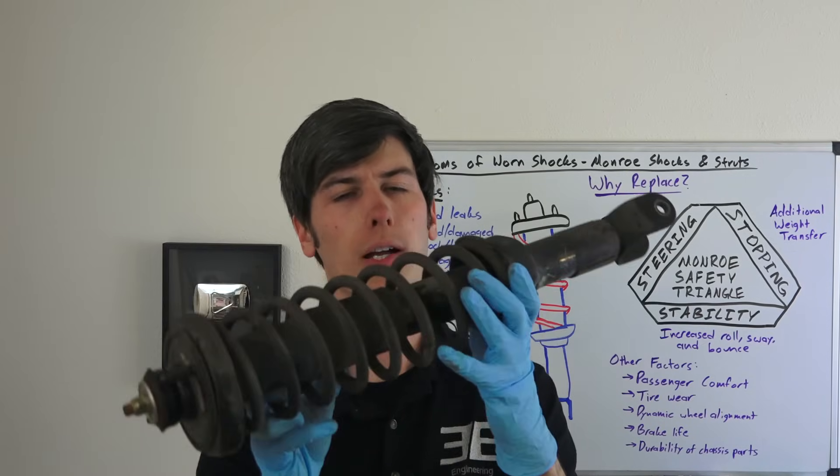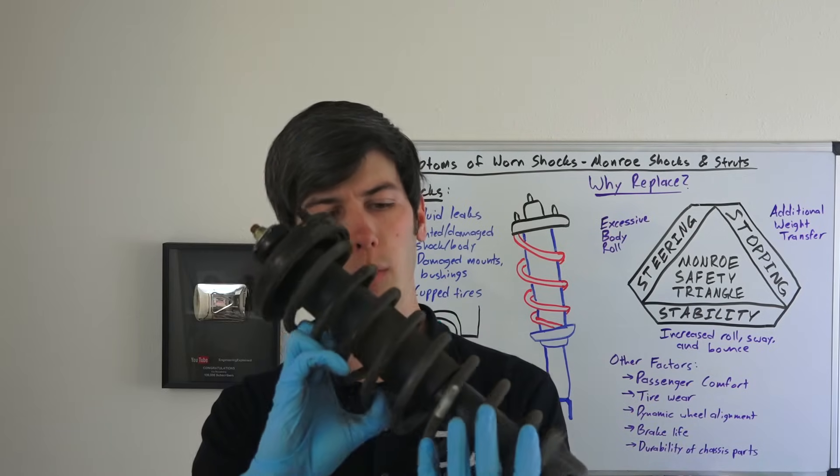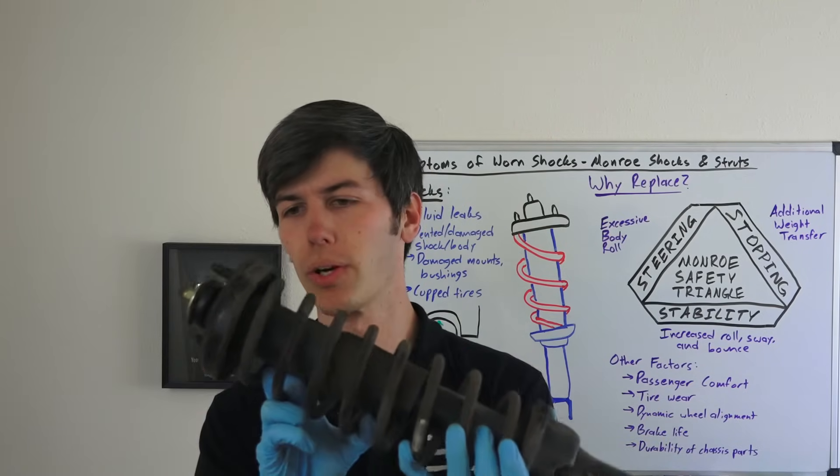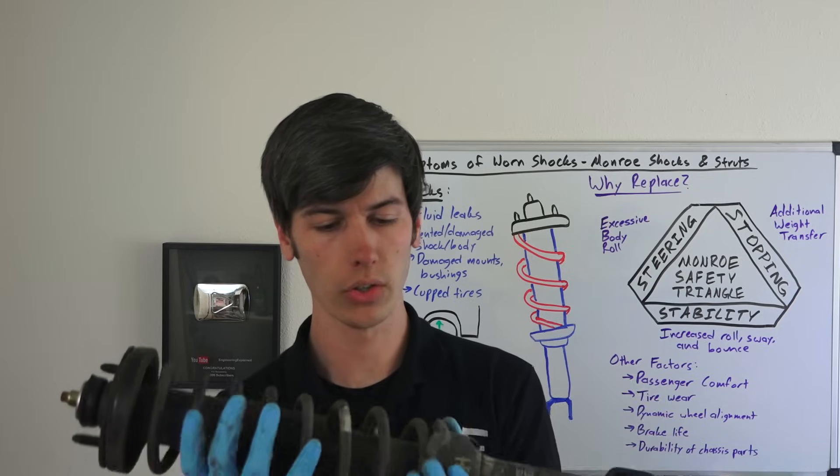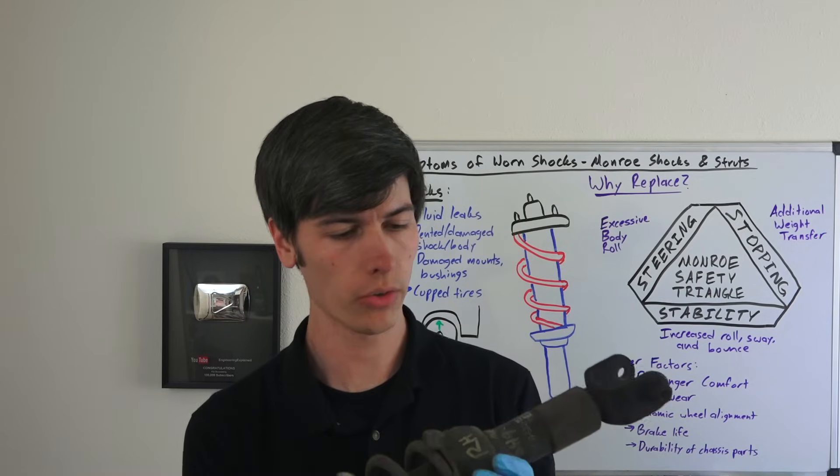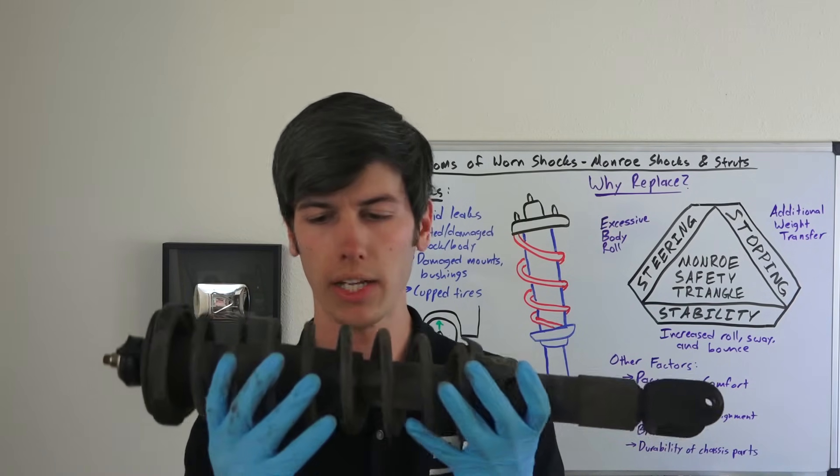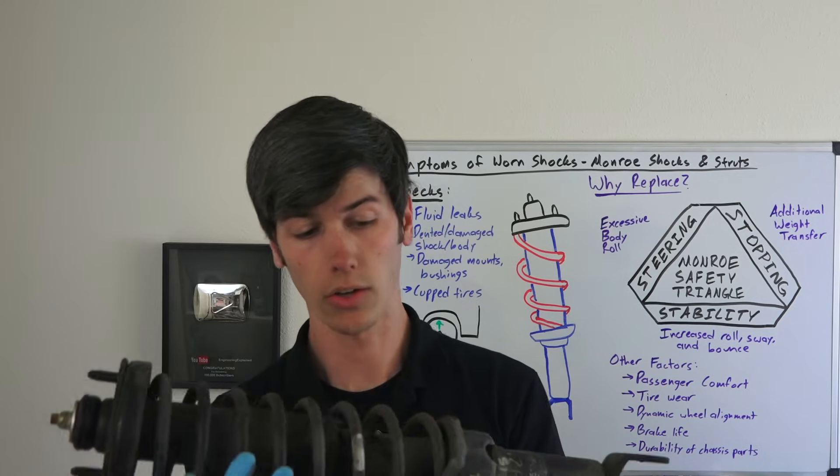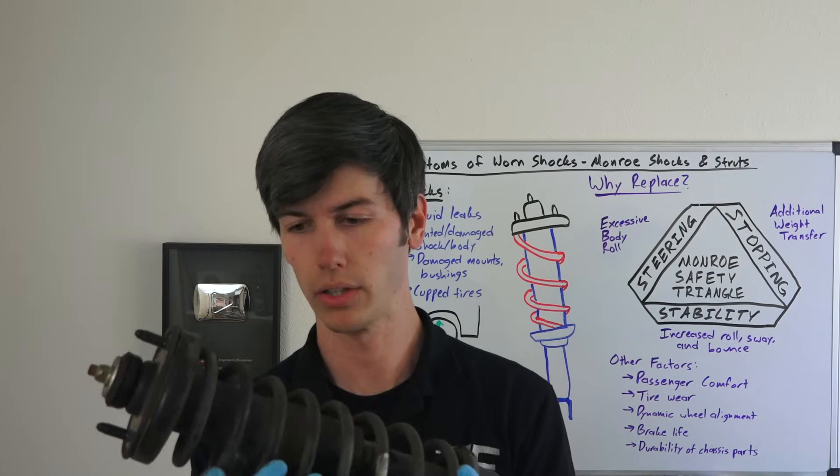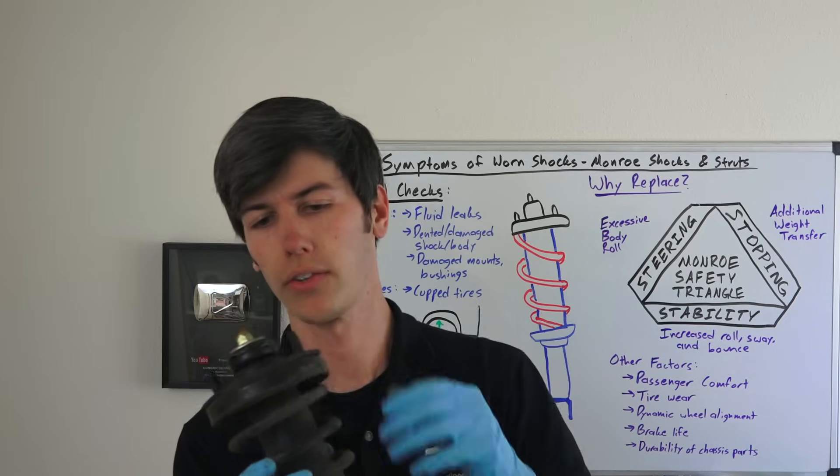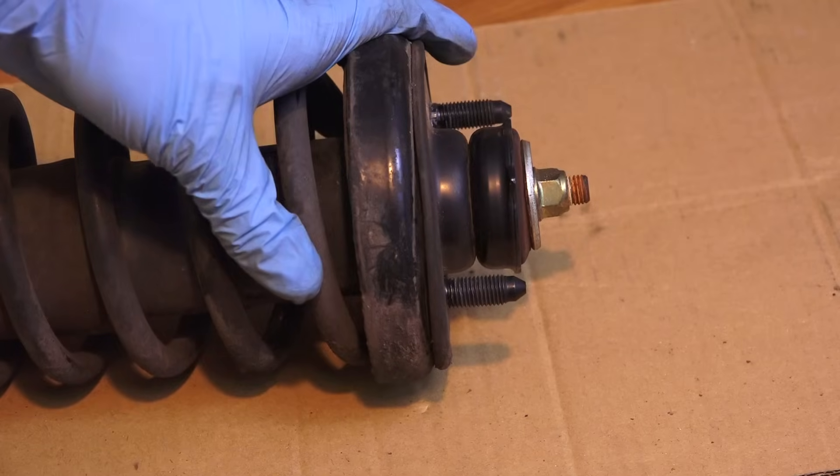So this is one of the shock absorbers out of my Acura Integra which I pulled out when it had about 125,000 miles on it. Actually it looks to be in pretty good shape - there's no dents or dings, no visible damage to the body of this shock, and there also aren't any fluid leaks.